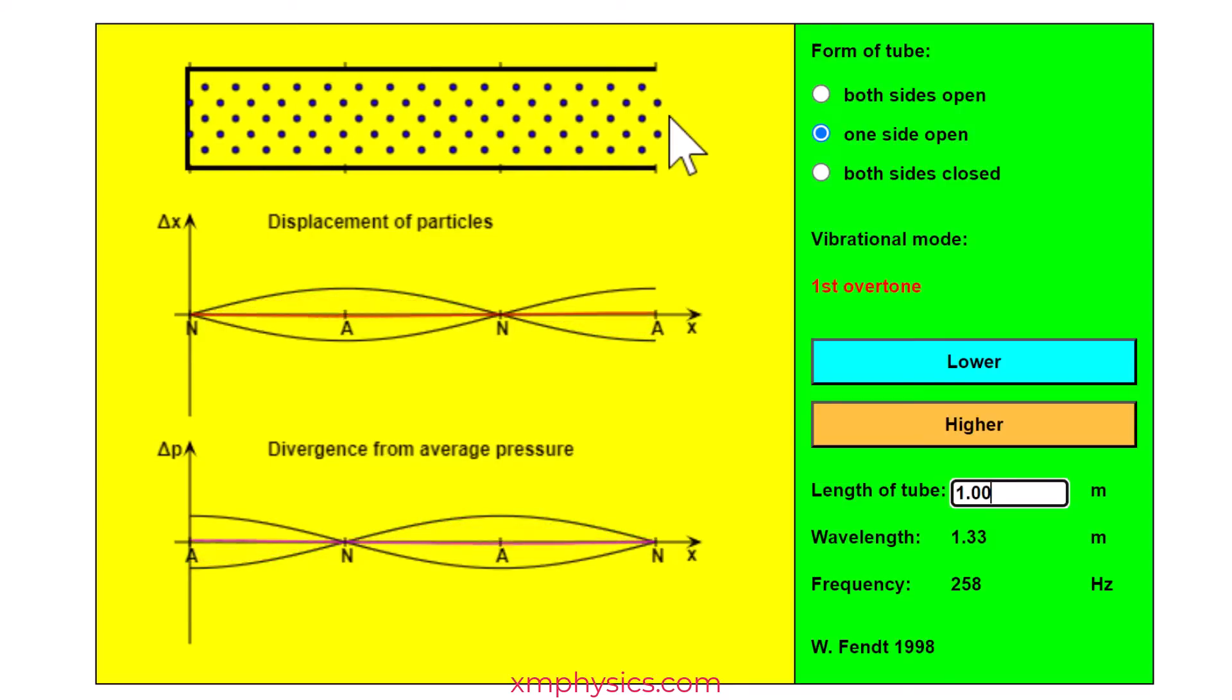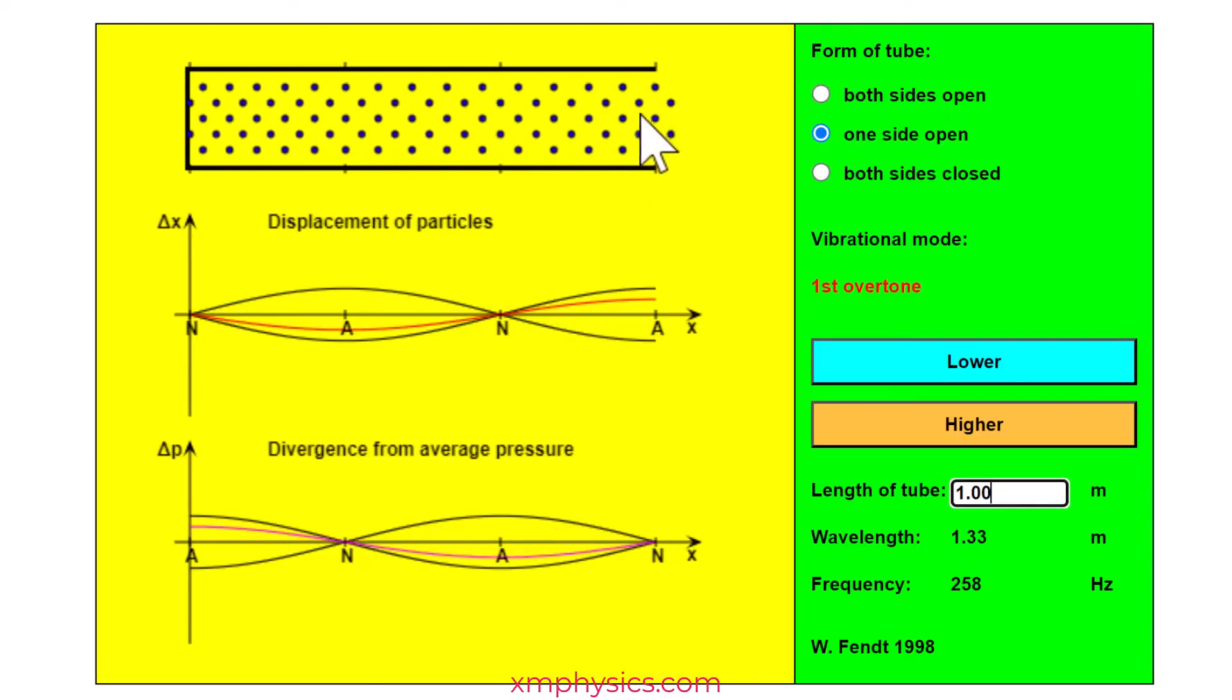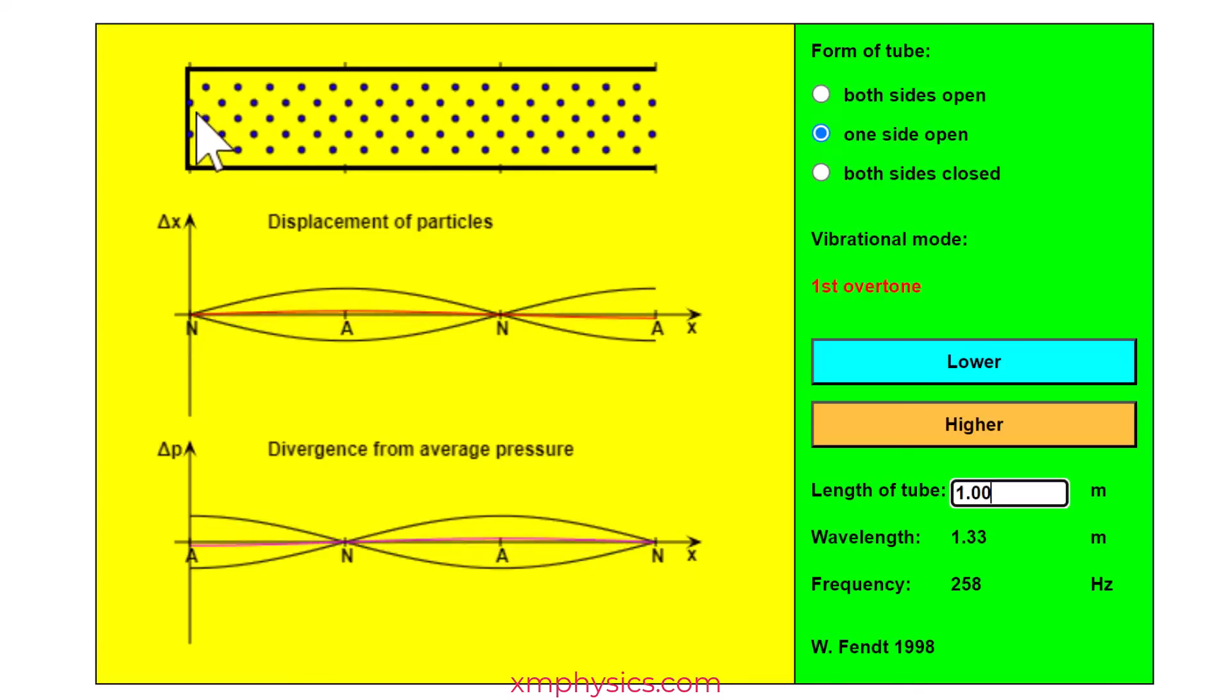Most students intuitively will accept that the open end must be a displacement anti-node. Air particles are free to oscillate here whereas at the closed end the air particles cannot displace leftward into the closed end right? So this is a displacement node.